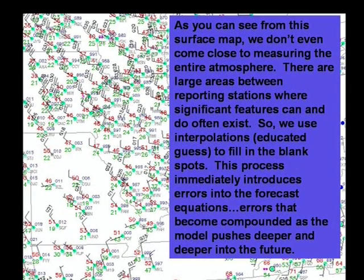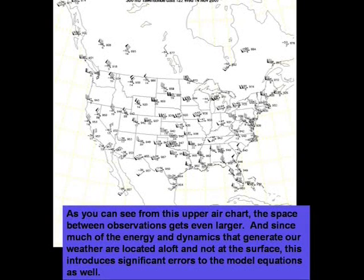Errors that will be compounded over time as the model pushes deeper and deeper into the future. And if you think it's bad at the surface, take a look at how bad it is aloft with the upper air charts. This is a look at the upper air map of the United States, and you can see there are huge areas between those observation locations. Plus, we're only taking observations two times a day, and since there's so much energy and dynamics up there generating our weather, we introduce even more potential errors to the model forecast equations.